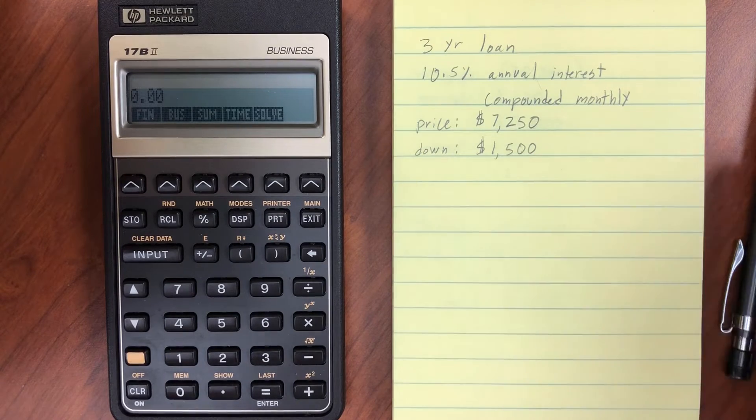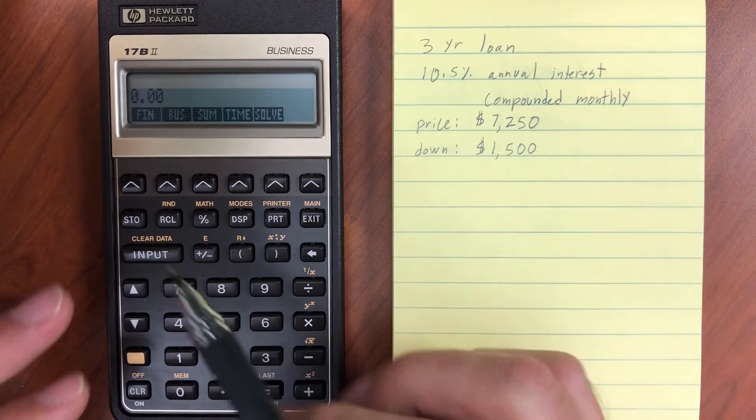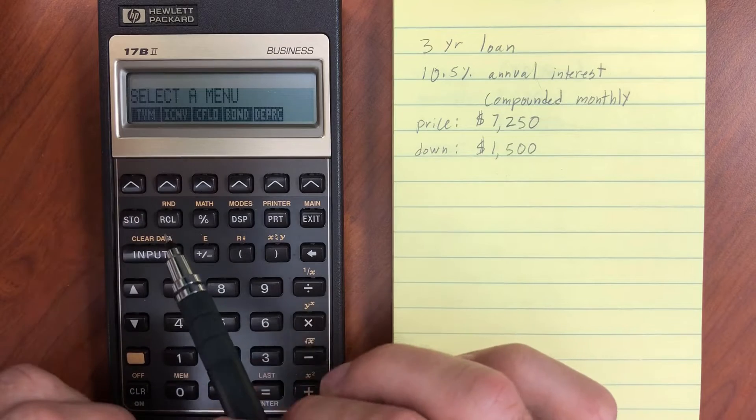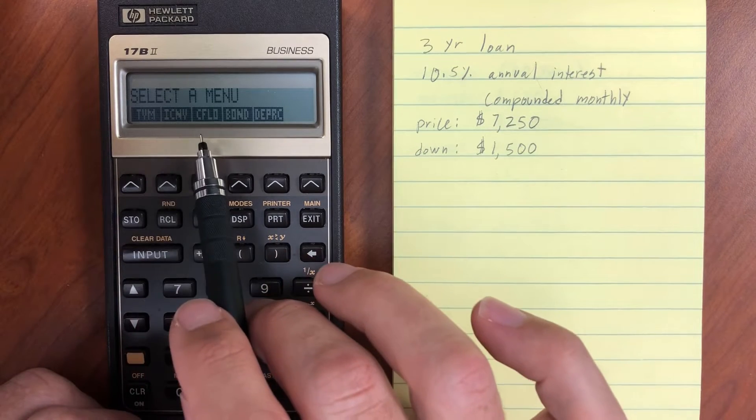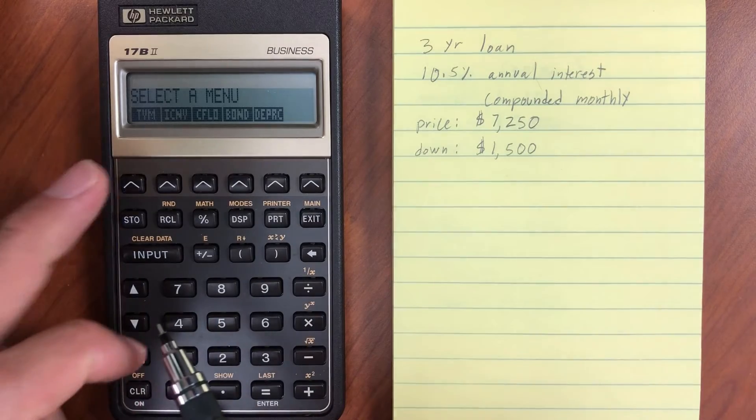All right, today we're going to be talking about the financial menu, and that's a very powerful menu that has lots of options under it. We have time value of money, interest conversion, cash flow, bonds, and depreciation.